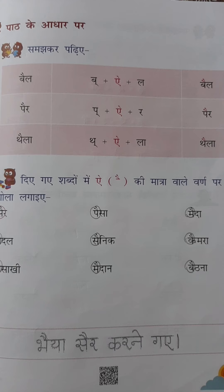Question number 2: Diye gaye shabdon par Ai-ki Matra waale varna par Gola lagayye. We all know that Ai-ki Matra waale varna par sarkal karna, gola lagana. Down to that — Bhaiya sair karne gaye. Join the dots and complete that line.